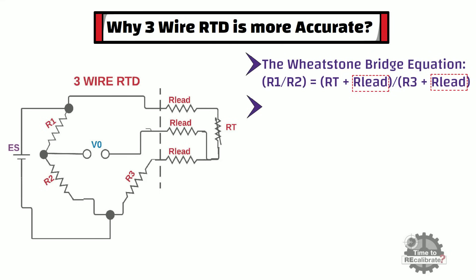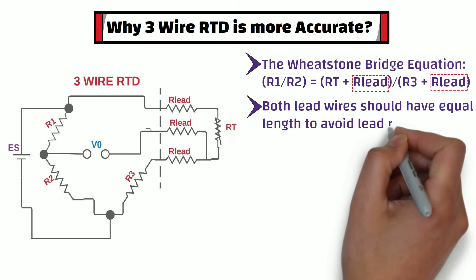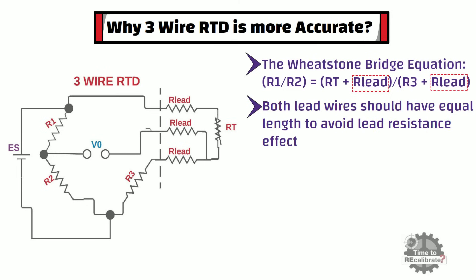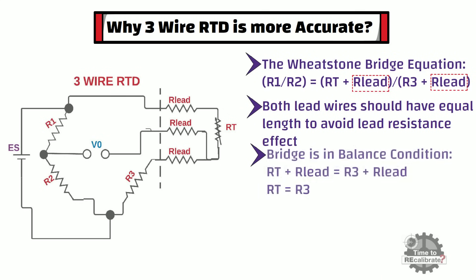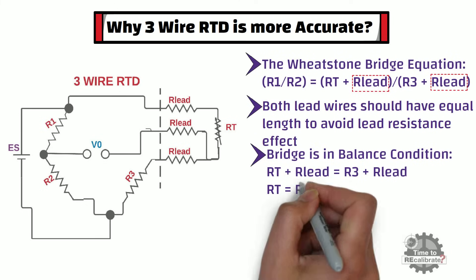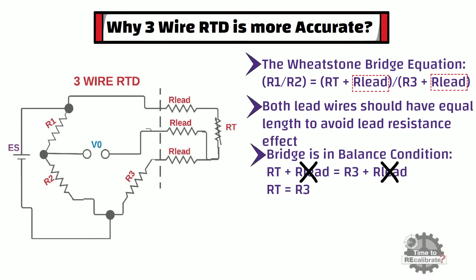However, both lead wires should have equal lengths to avoid lead resistance effect in the circuit. As you can see, this is the equation when the Wheatstone Bridge is in balance condition. In this equation, lead resistance cancels each other with the help of a third lead wire, and this is the reason that temperature measurement does not get affected due to lead resistance.